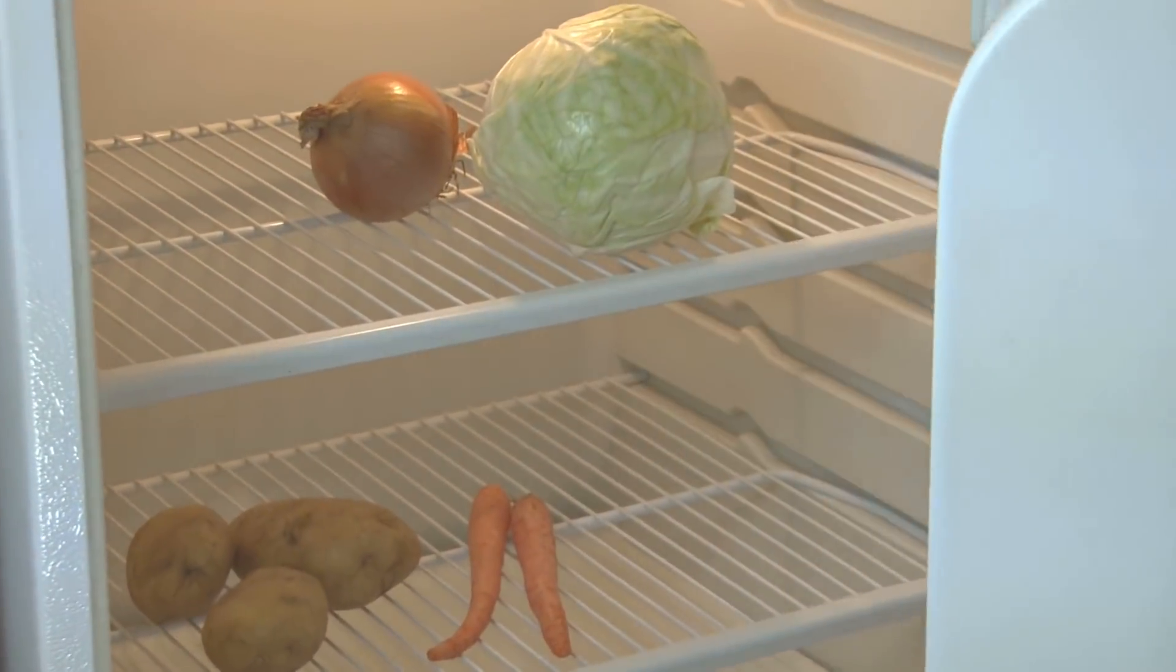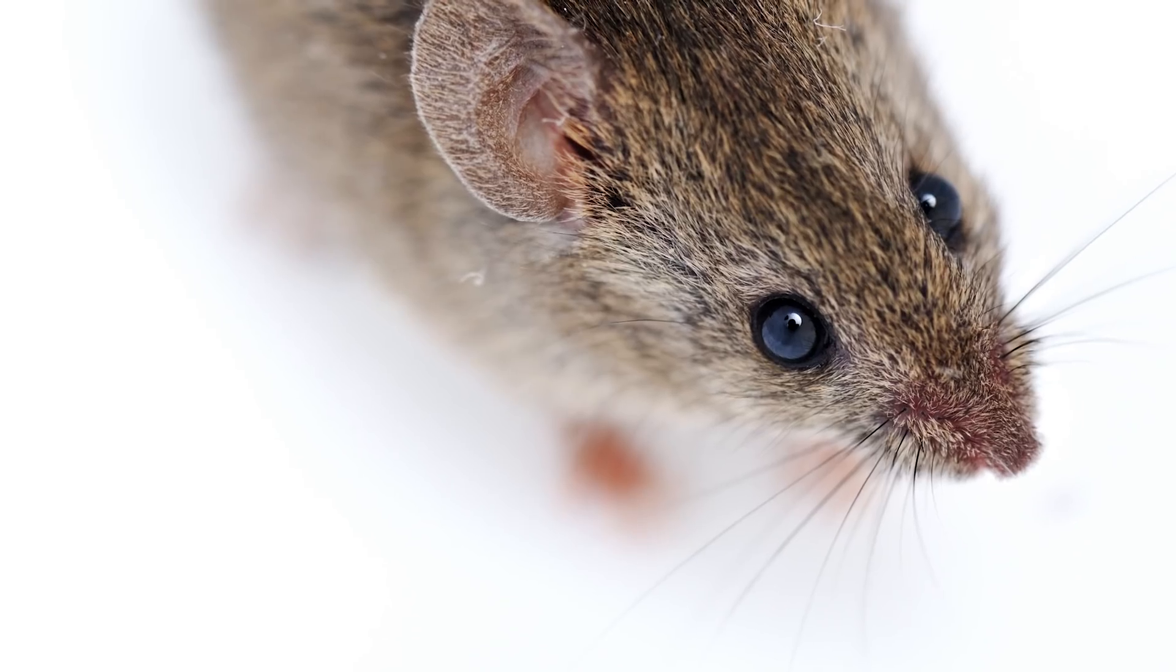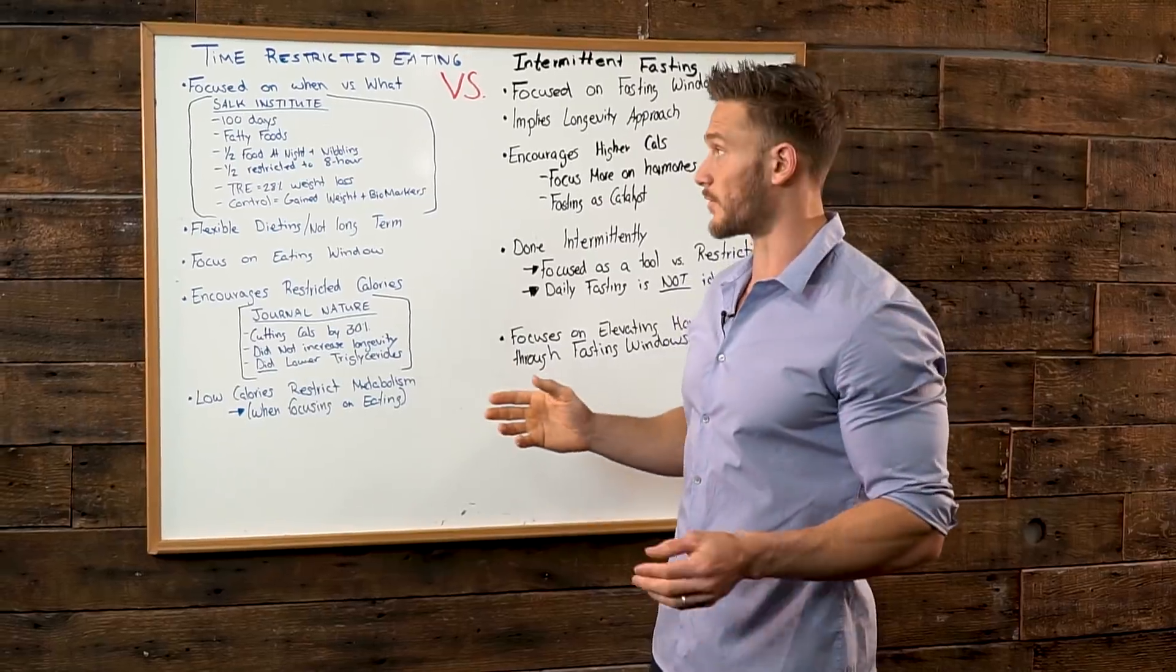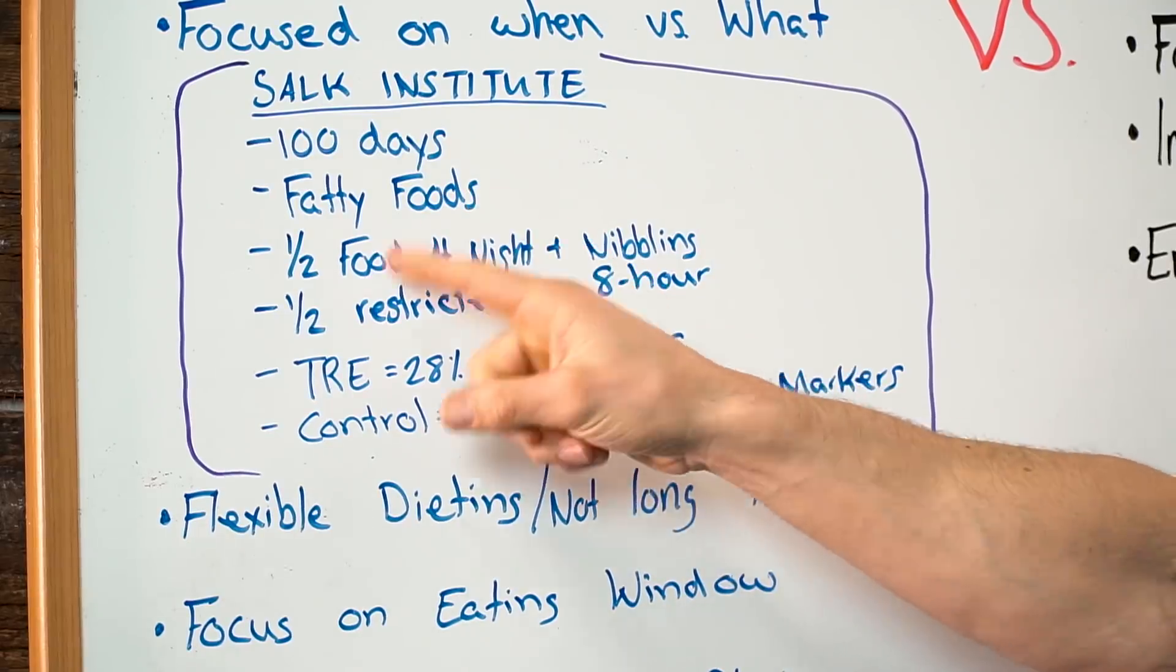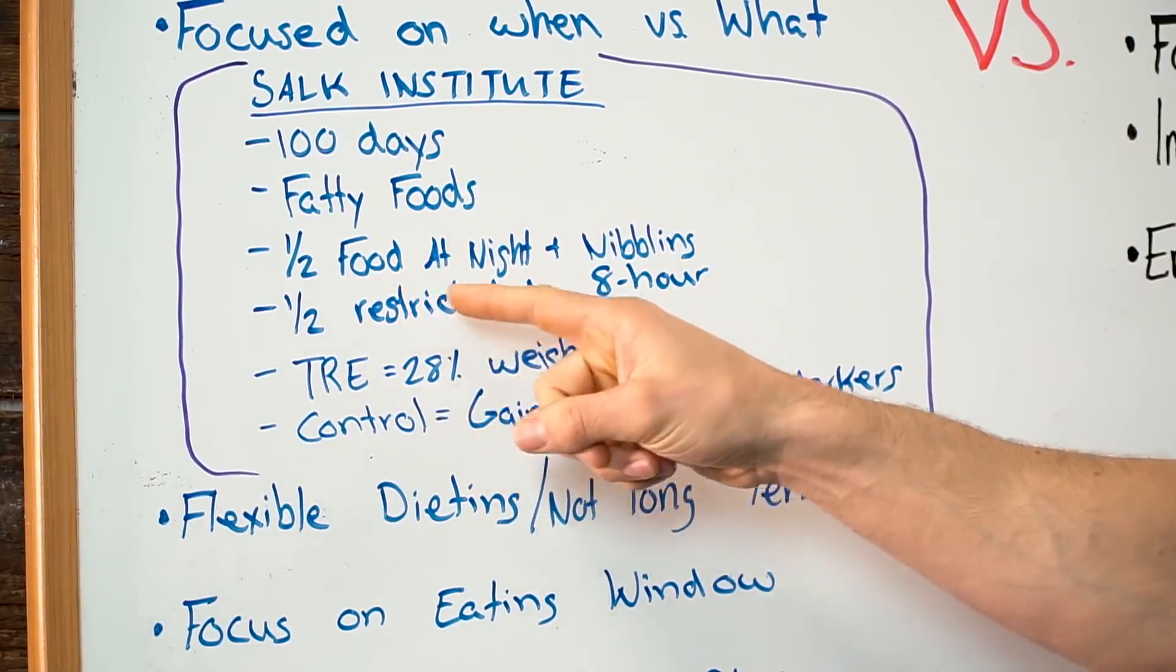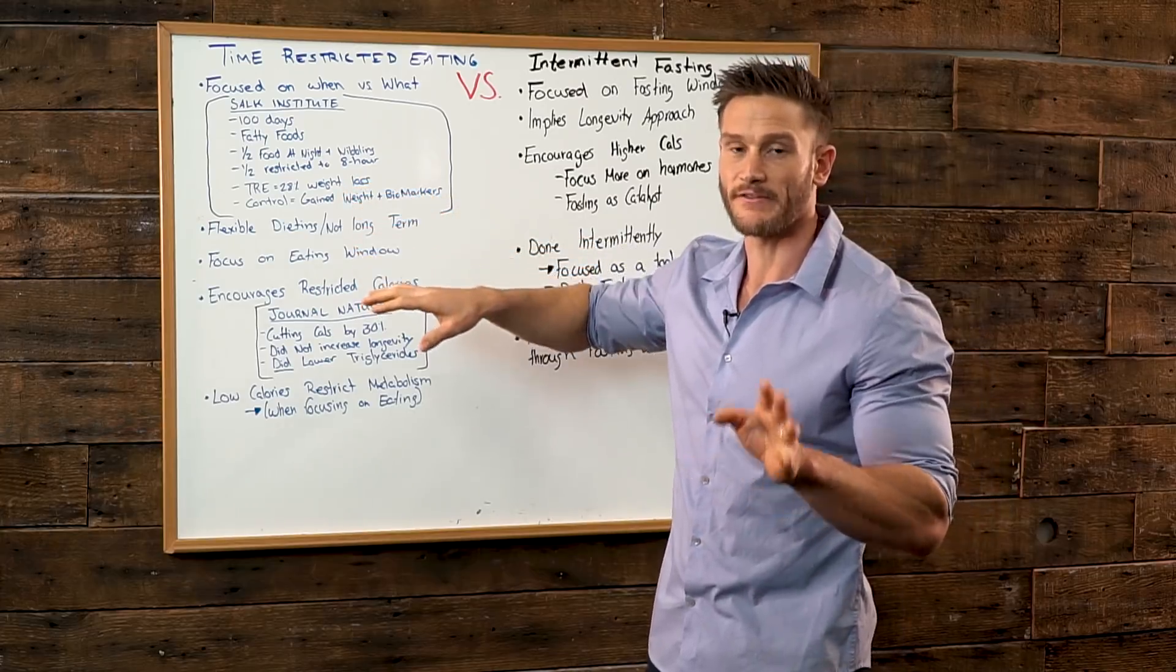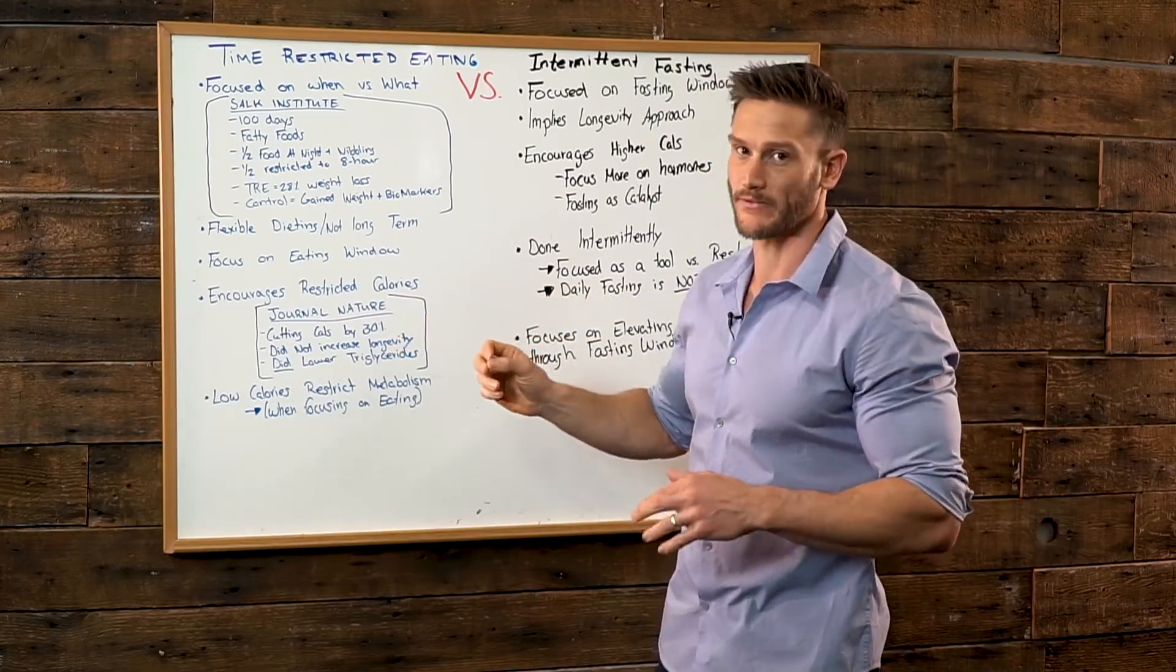The Salk Institute did a study on mice, and this was really interesting. They did a long study, 100 days, and they gave these mice fatty foods. They broke them into two groups. One group had half their food at night and then nibbled on food the rest of the day. They were given like a 60% fatty diet, so most of their food was coming from fat.